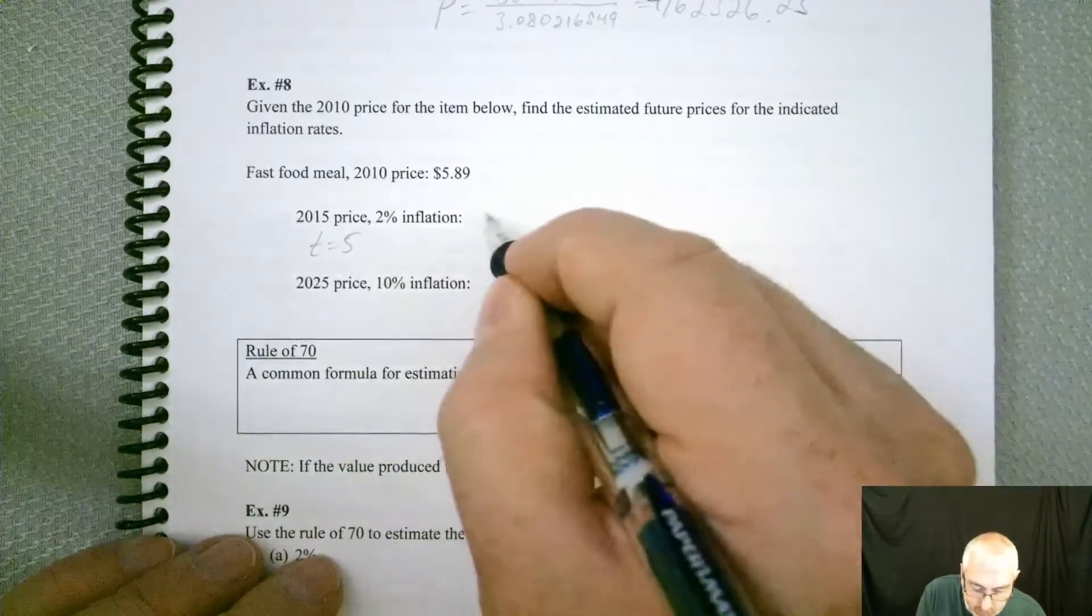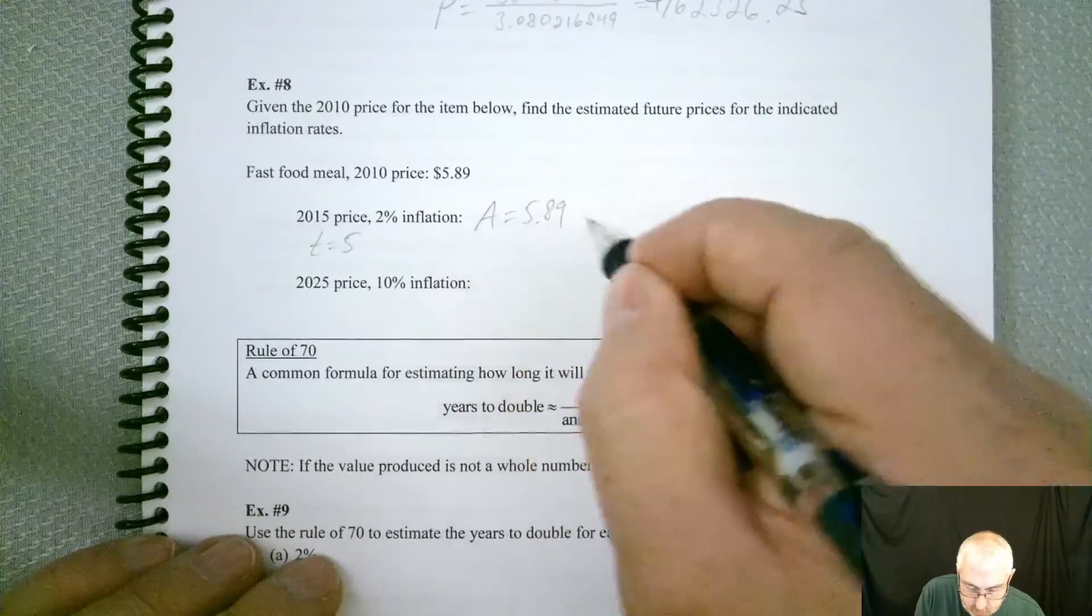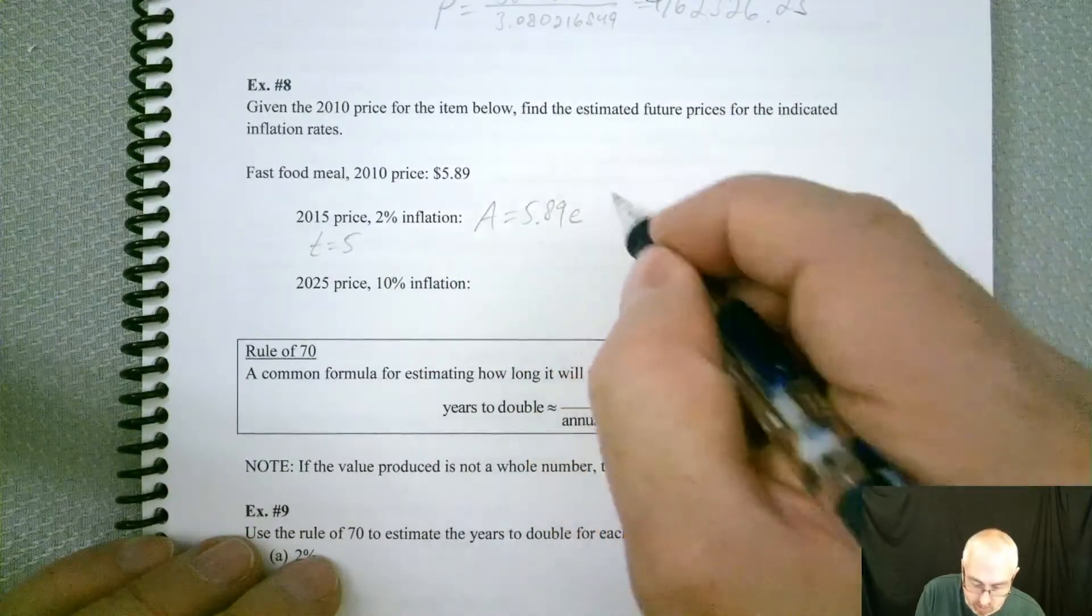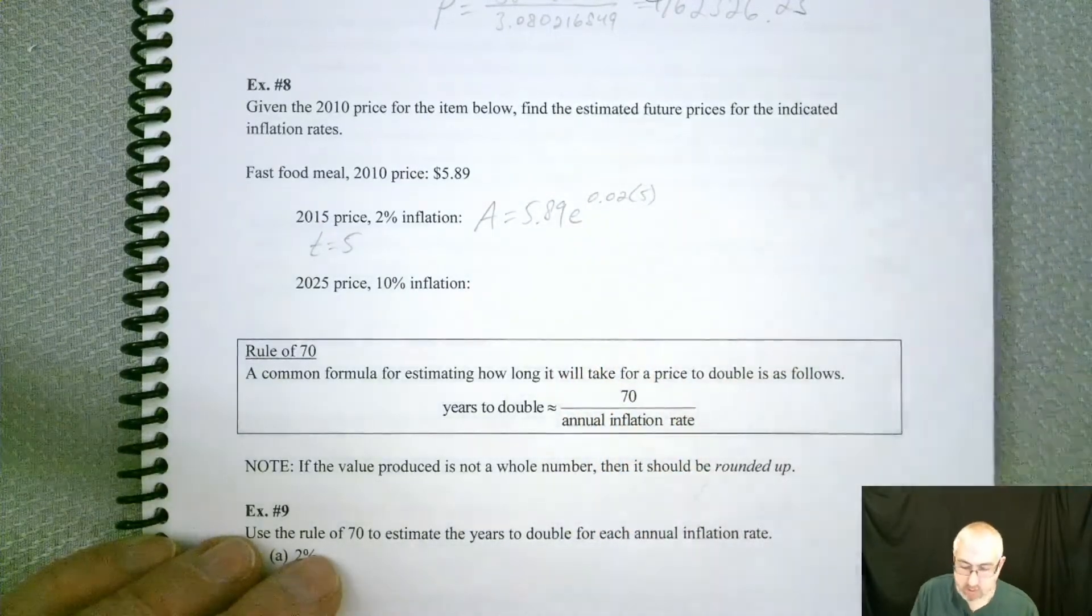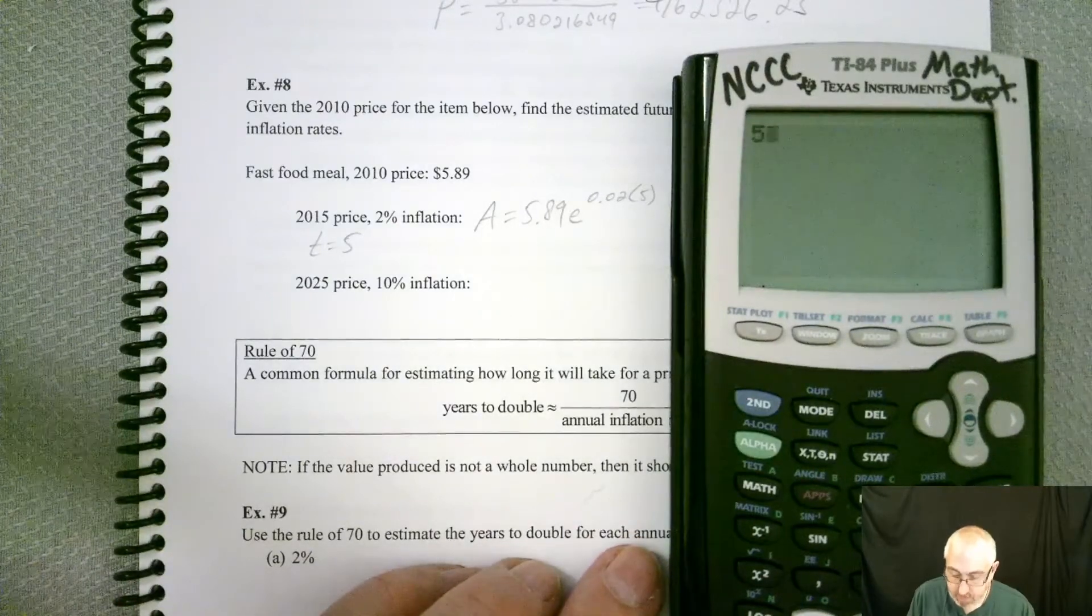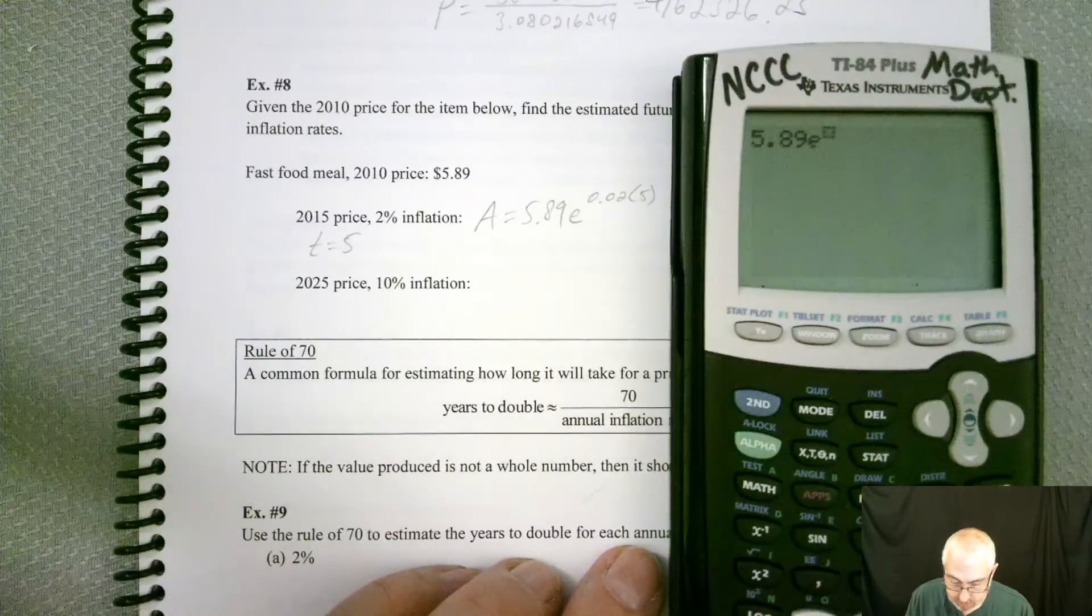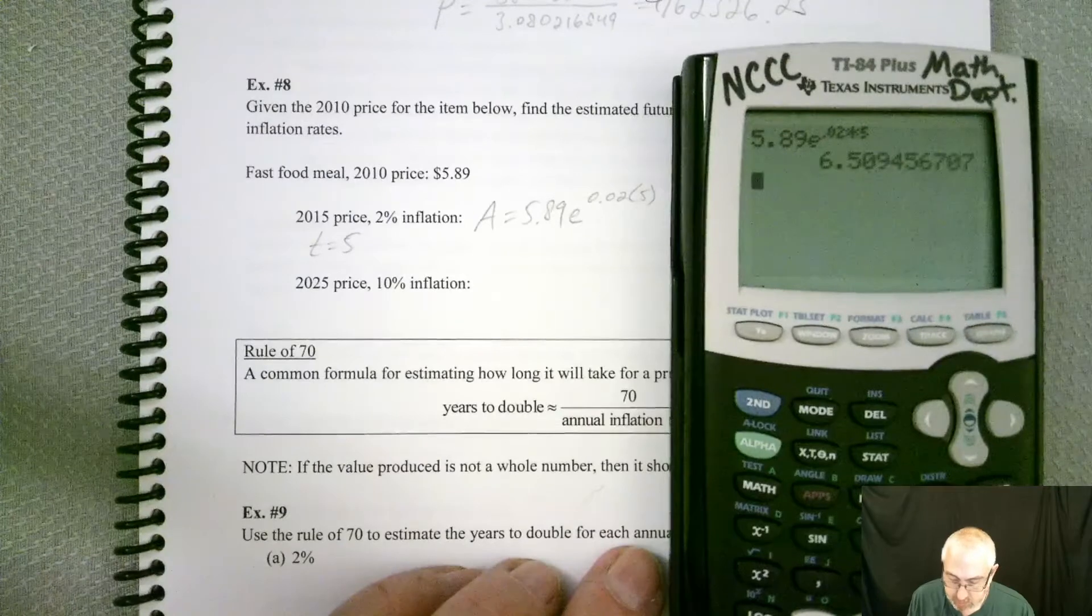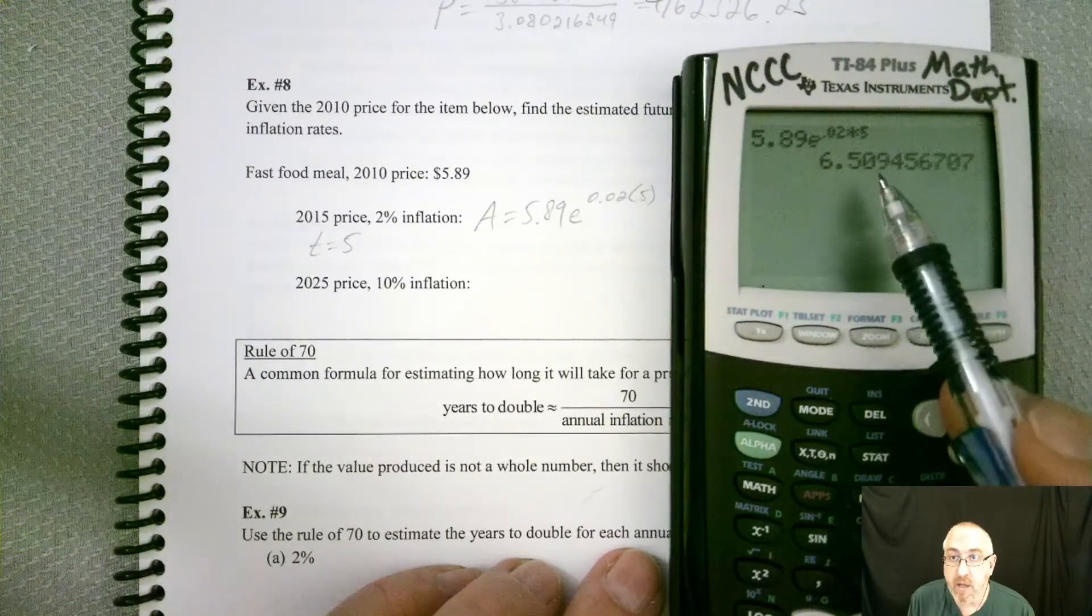So T must be equal to 5 in this case. So now we're home free. So our starting point was the $5.89. We still want to use inflation, so we're still using E. We have our inflation rate, and we have our time. So let's try it on the graphing calculator. So we have $5.89. We need our E. And then 0.02 times 5 equals $6.51.